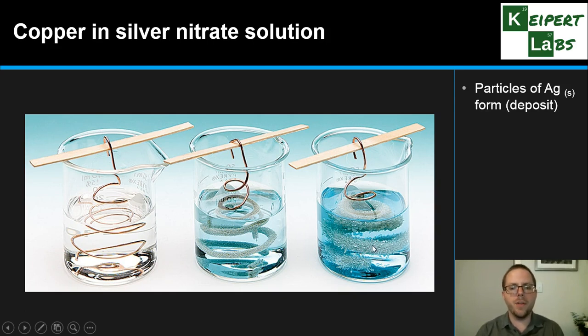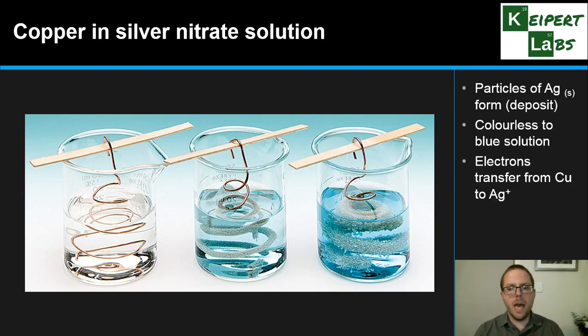Especially you can see in this end picture that particles of silver metal have formed or deposited. It almost looks like ice crystals or snowflakes that are actually crusted onto it. The solution has gone from colorless to being blue, increasingly blue over time. The reason that this happens is that electrons are being transferred from the copper metal to the silver.